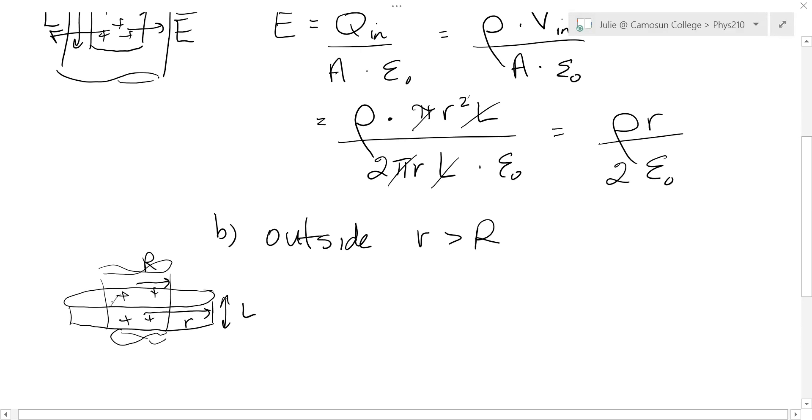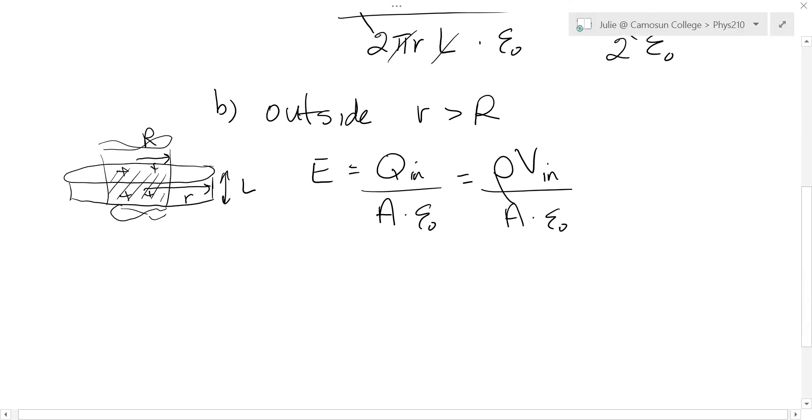And we want to know just how much charge is inside this Gaussian surface. So just that part there. So the electric field outside is q over A epsilon naught. And so it's still the volume charge density times volume gives charge. But now the volume is just this part in here, which is capital R for the radius. So this is rho times pi capital R squared L because there is no charge out here in the region that goes out to little r.